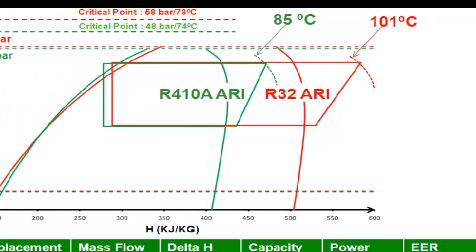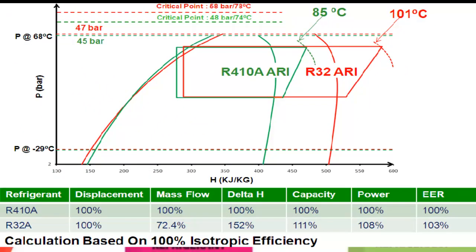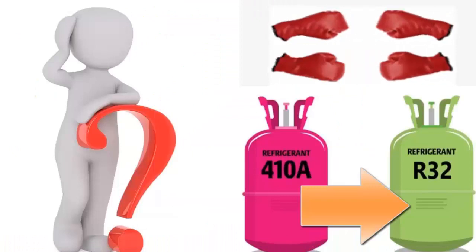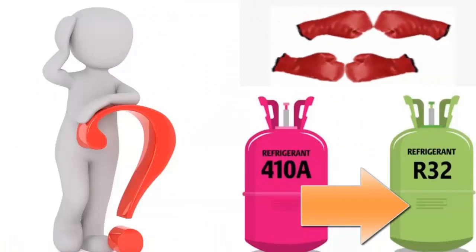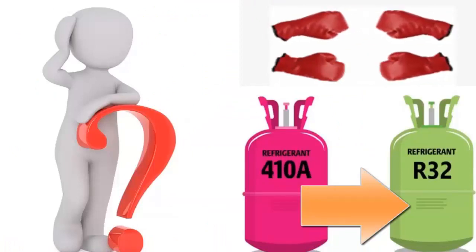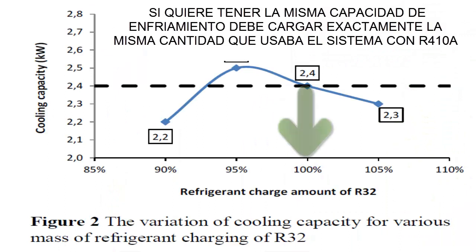4. If we decide to switch to R-32 to achieve similar cooling capacity, the refrigerant charge amount should be around 95% of what was used with R-410A.